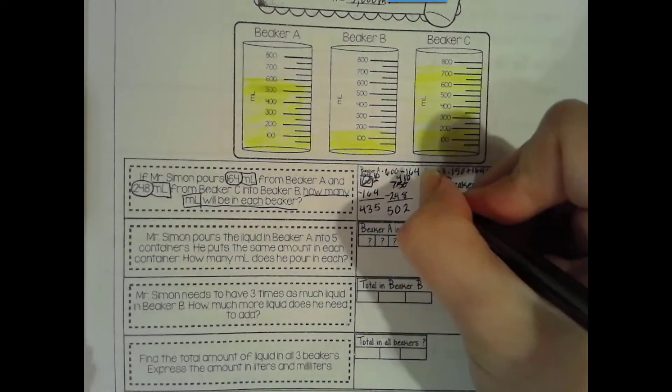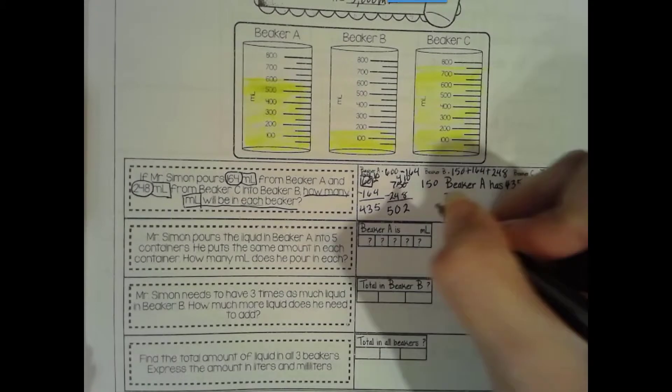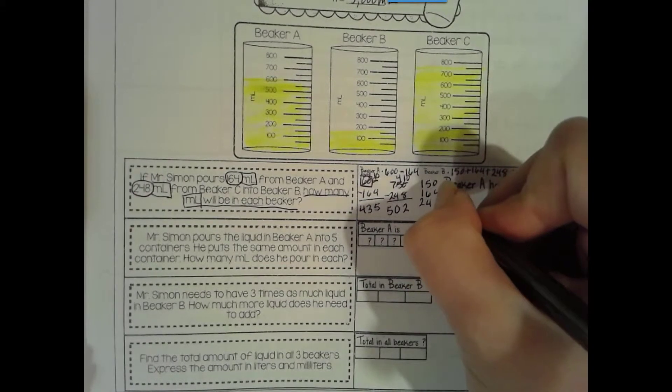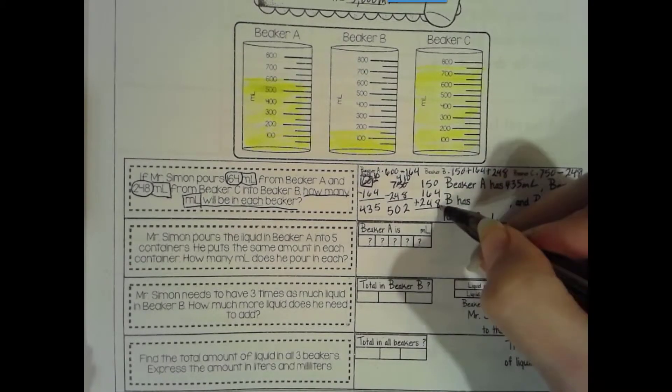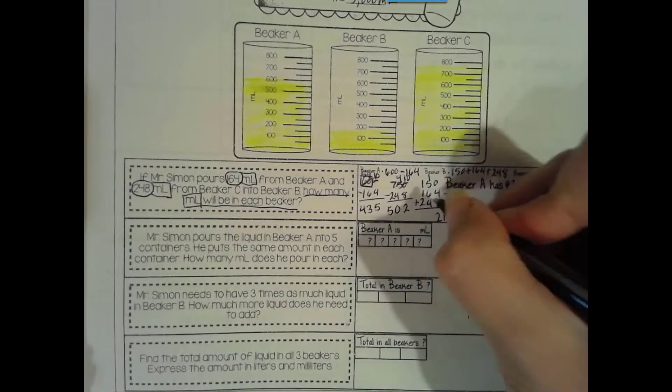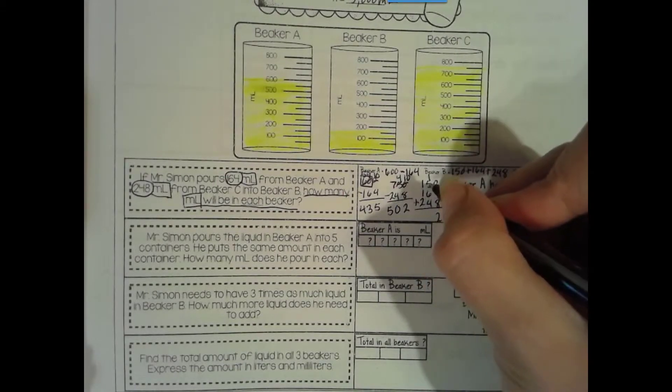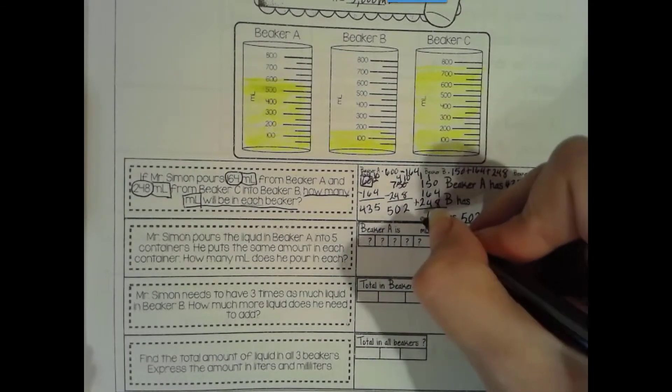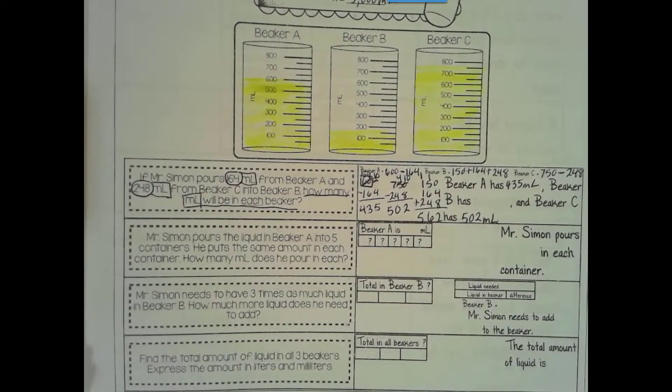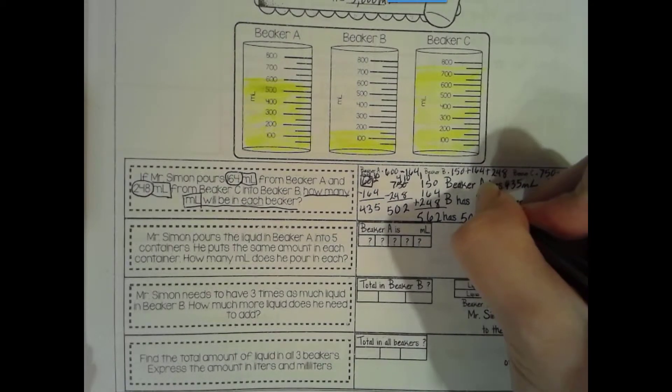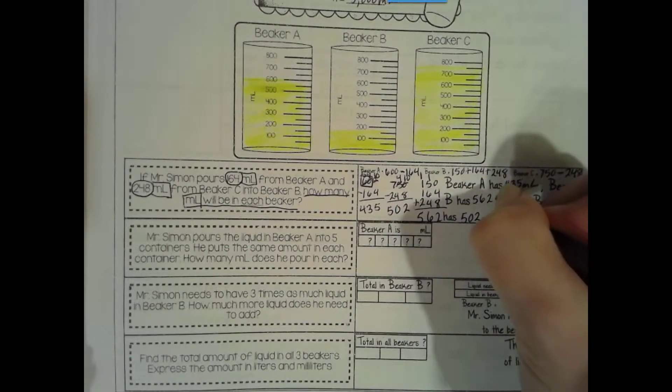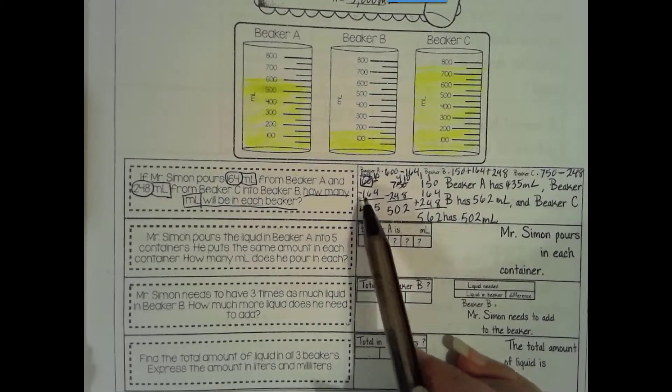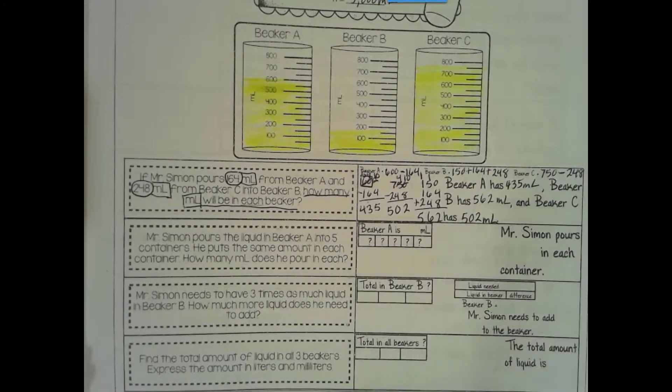Because it says we're going to pour, so we're going to take it out. So I'm going to do the subtraction. 600, take away 164. More on the floor, go next door, regroup 10 more. There are 60 tens in 600. I'm just going to take one, leaving 590. And then I make this the 10. 10, take away 4, is 5. 9, take away 6, is 3. 5, take away 1, is 4. Next we have 750 that we're going to take out 248 from. 10, take away 8, is 2. 4, take away 4, is 0. 7, take away 2, is 5. So, so far, beaker A has 435 milliliters. We haven't found beaker B yet. And beaker C has 502 milliliters. To find beaker B, we have to add. 8 plus 4 plus 0 is 12. 10 plus 5 is 15, plus one more is 16. So, now in beaker B, there's 562 milliliters. So, we poured it out of these, so we had to subtract. And we poured it into this one, so we had to add.